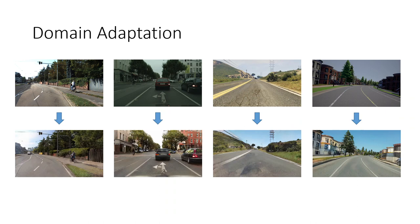Here we see how images from different input domains are transferred into the same output domain. The first two examples show photographs while the last two examples show renderings of synthetic scenes. Although the input image styles vastly differ, the output style is consistent. For instance, the cloudy second image now shows a sunny day and the dry desert-like environment in the third image is turned into a much greener version.